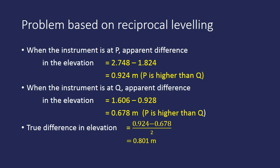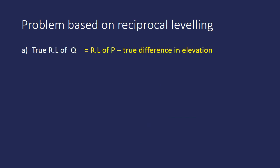Now we find the true RL of Q. The true RL of Q equals RL of P minus the true difference in elevation. With RL of P given as 126.386 m and the true difference of 0.801 m, the RL of Q equals 125.585 m.